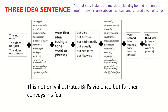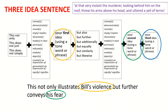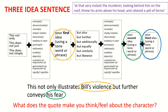Now I need my third and final idea. To recap, I have my first and second ideas, which are Bill's violence and his fear. To help me come up with my third idea, I'm going to ask myself: what does the quote make you think or feel about the character? Looking at the quote, it makes me think that Bill is paranoid because he keeps looking behind him like something is there. That is going to be my third idea, and by using the flowchart I have written: 'and his paranoia.' The quote has made me think about Bill's paranoia — that is my third and final idea.